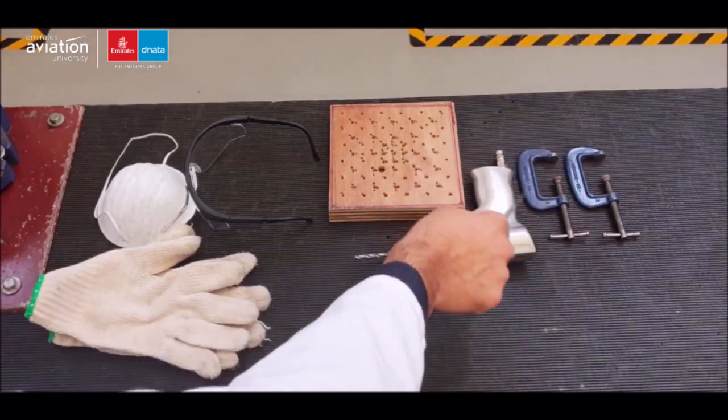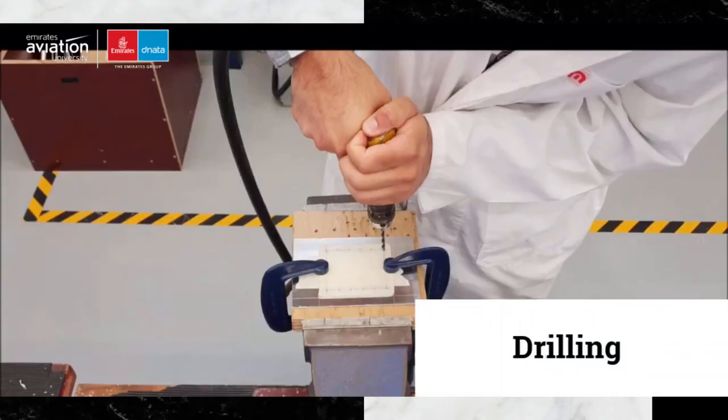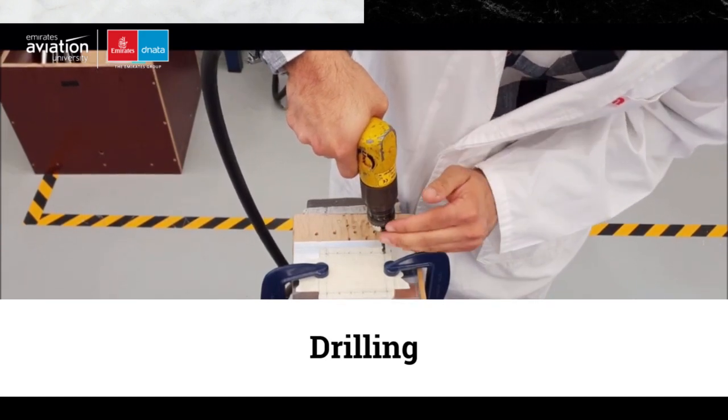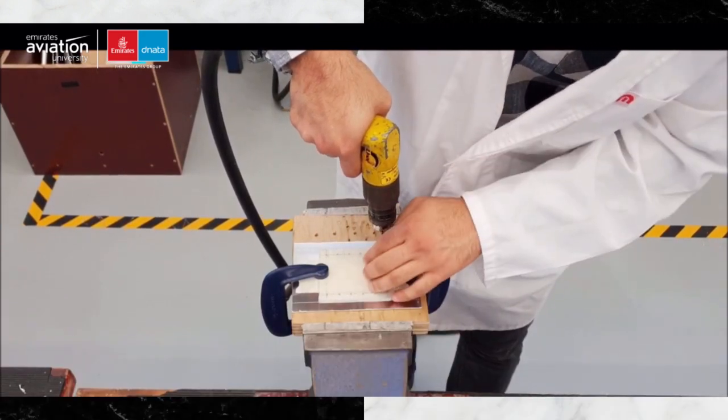Use the C clamps where you will hold the metal sheet on the wood block while you are drilling, and make sure that the pneumatic drill is straight and perpendicular to the metal sheet.